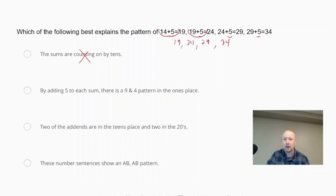These number sentences show an ABAB pattern, so I don't see anything related with ABAB patterns where we're talking about the numbers being the same here, so I'm going to eliminate that.